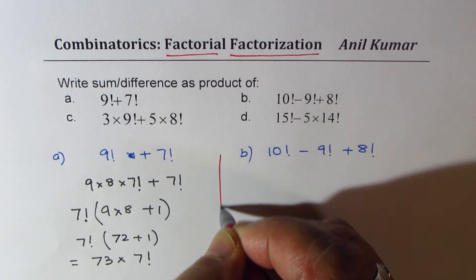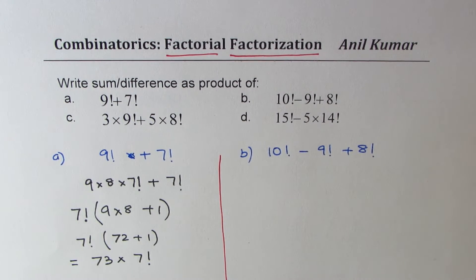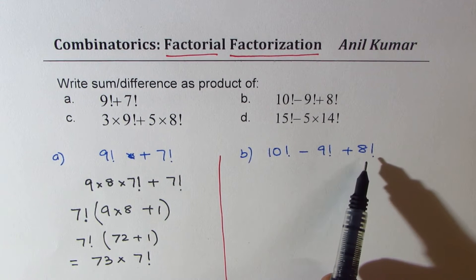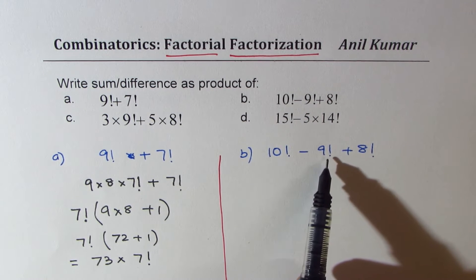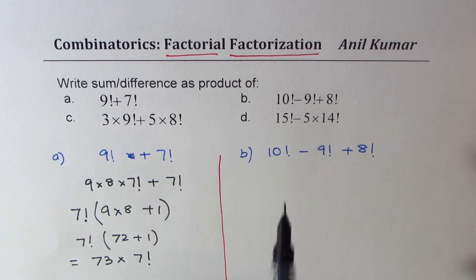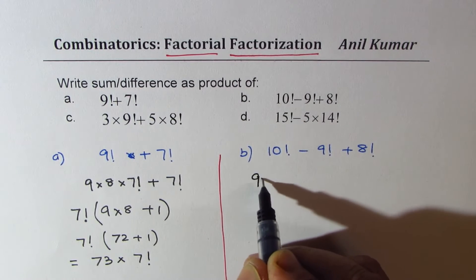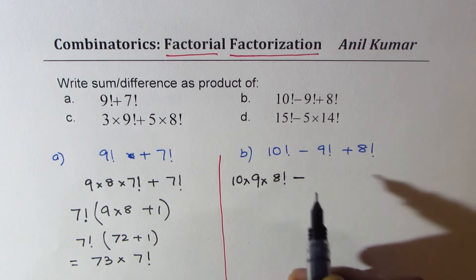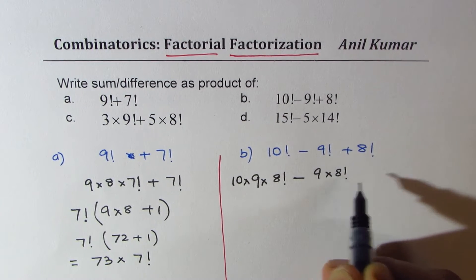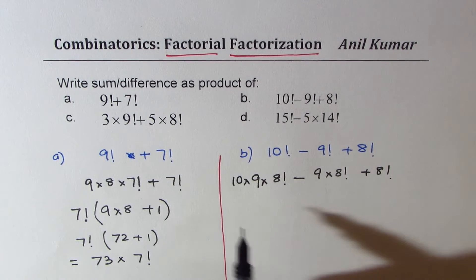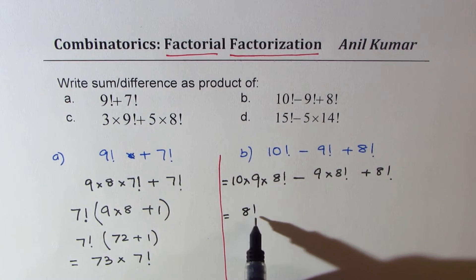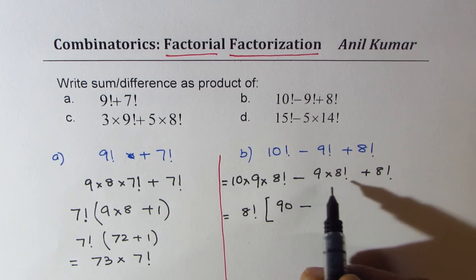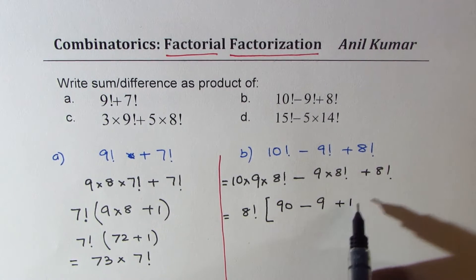Now let's do part B: 10 factorial minus 9 factorial plus 8 factorial. We get them all in terms of 8 factorial. So 10 factorial could be written as 10 times 9 times 8 factorial, minus 9 factorial written as 9 times 8 factorial, plus 8 factorial. Now clearly 8 factorial is common, so what do we get? We get 10 times 9, which is 90, minus 9, plus 1.